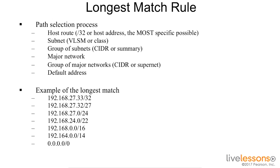For example, if I am trying to match based on the longest match and I have a packet that comes in looking for the destination 192.168.27.33, I'm in luck — I have an exact match. However, if I have a packet that comes in looking for 192.168.24.1, I will have to use the fourth address down because that is the most specific address that I have available.